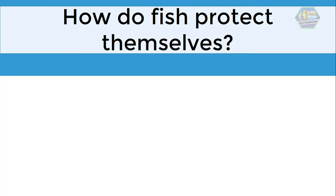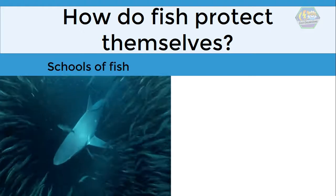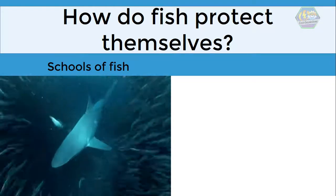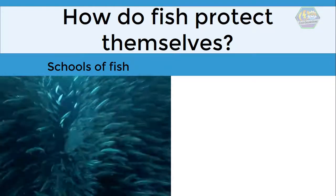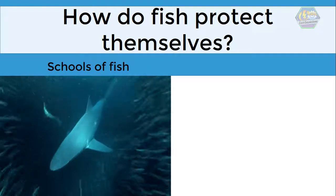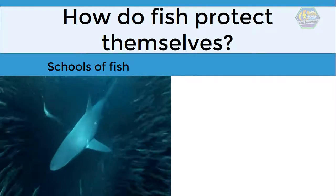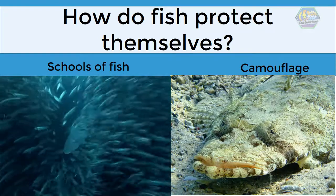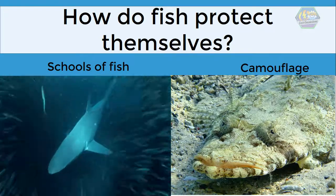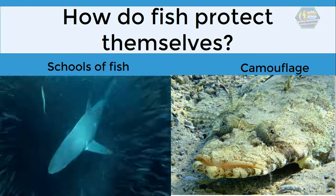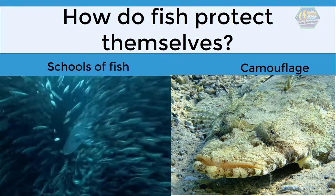How do fish protect themselves? Fish have many techniques. Sometimes fish travel in schools — and we're not talking about the school where students take classes. Schools of fish are large numbers of a certain group of fish that travel together. Another way fish protect themselves from predators is to camouflage, or blend in with their environment — they adopt colors to match the sand.